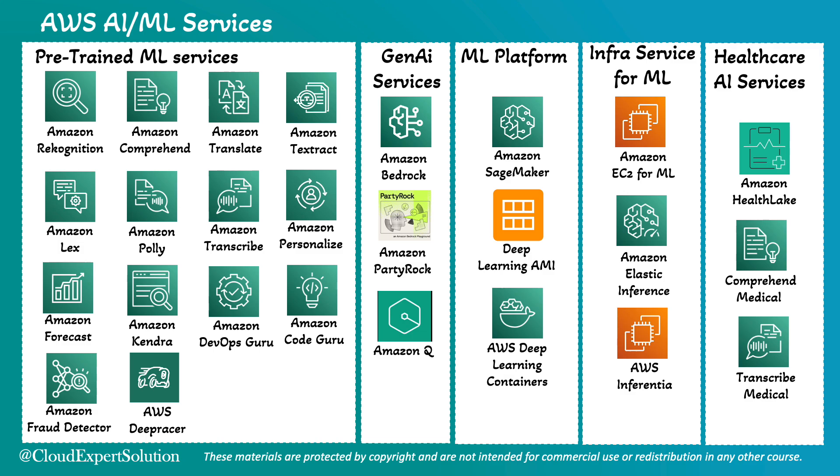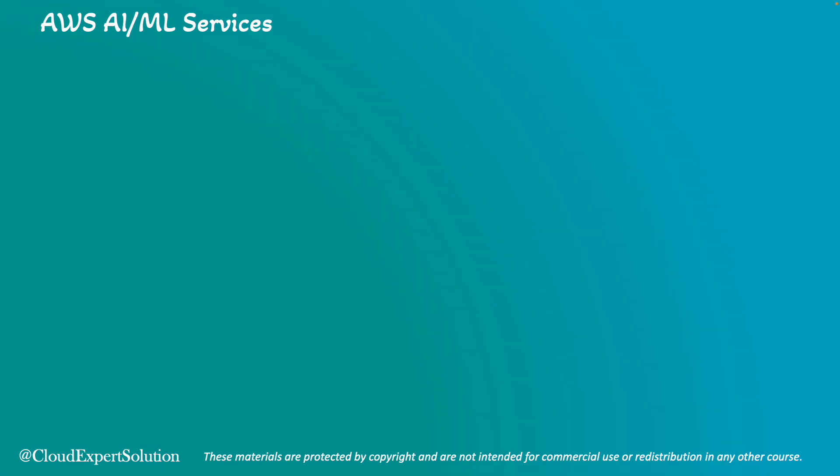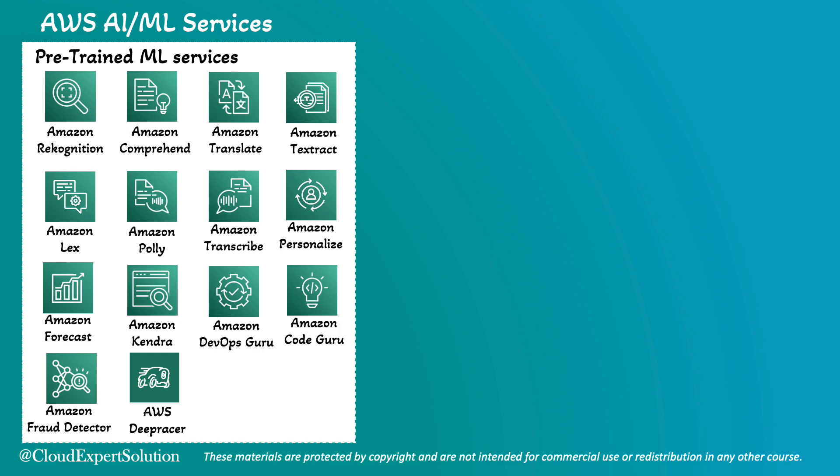Let's dive in. AWS AI/ML services can be broadly catalogued into five categories. First, the pre-trained services. To run these services, you don't have to manage any infrastructure, and you don't need to think about model training. These services are specially built for a specific machine learning use case.